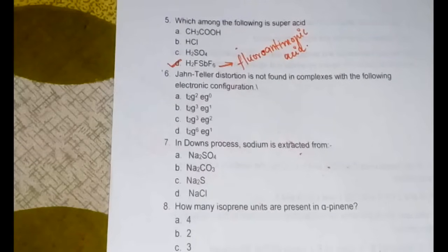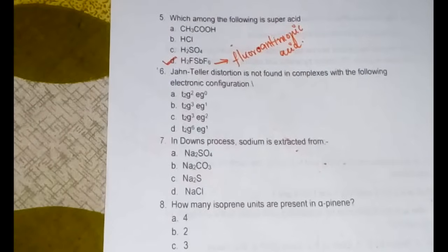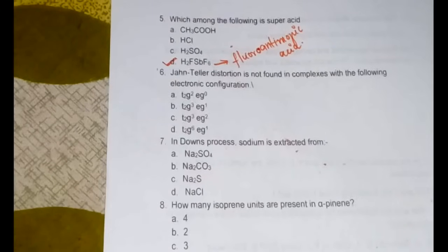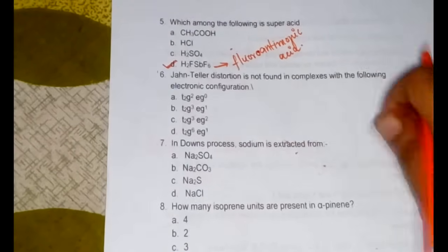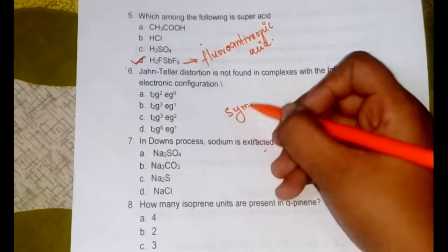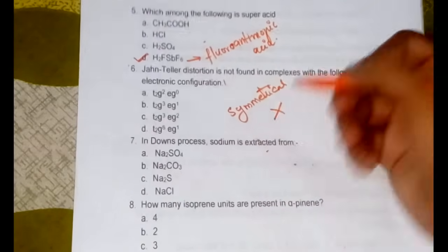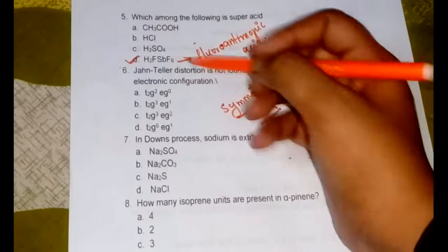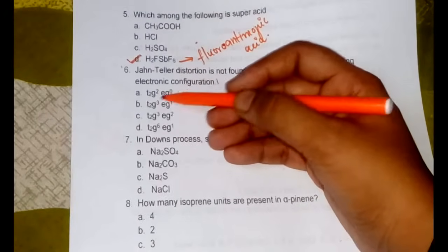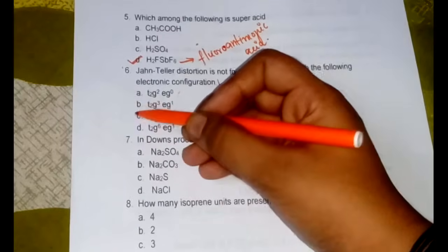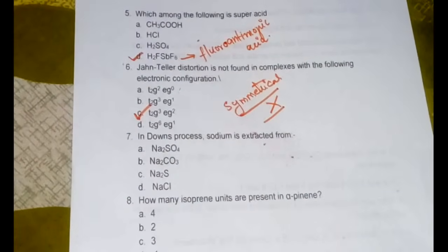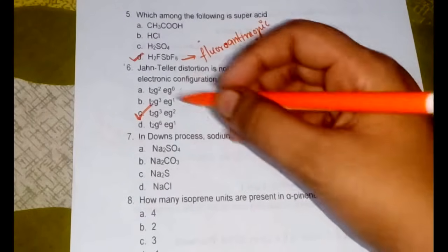Now the sixth question is a very important thing which is the Jahn-Teller distortion. Jahn-Teller distortion is a geometric distortion where a non-linear molecular system will be undergoing a distortion to reduce the symmetry and energy. There are different types in low spin and in high spin complexes for different electronic configurations. I will be taking a detail class on this in the coming days, but before that you have to remember that in case of a very symmetrical configuration most of the times this does not occur. If symmetrical configuration is there then Jahn-Teller distortion will not occur.